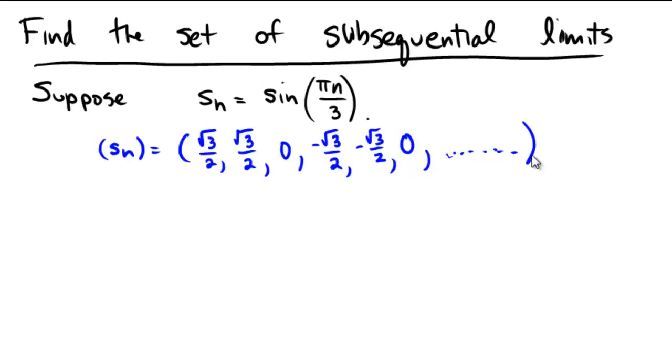So it should be pretty clear that this is a sequence that does not converge. It doesn't settle down towards any particular value. It also doesn't fly off towards infinity, so it is bounded here. In fact, it's bounded on the high end by radical 3 over 2, and on the low end by negative radical 3 over 2.